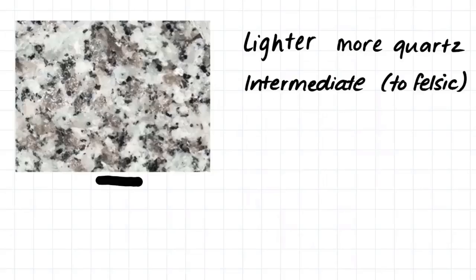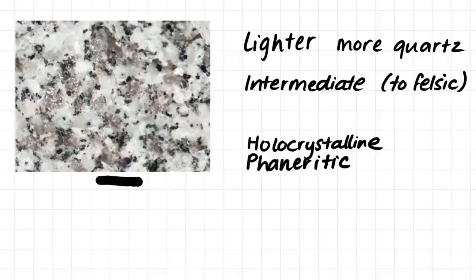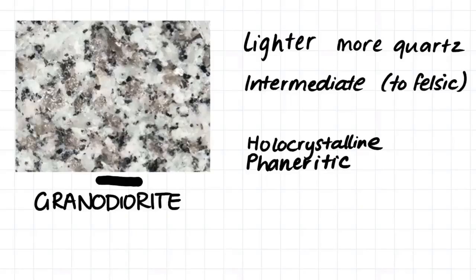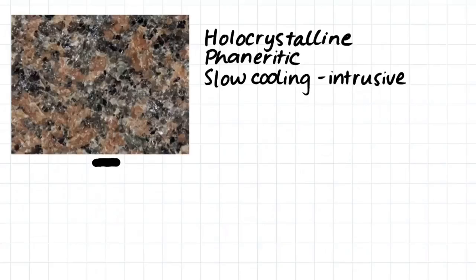If we then compare that diorite to this sample here, which is much more lighter in color, therefore has more quartz, we would probably call this sample here to be intermediate and almost maybe felsic. Once again, this rock is holocrystalline and has a phaneritic texture. This sample is a granodiorite. And if we then compare it to the sample we just looked at, the diorite, we can see that the diorite is much darker than the granodiorite.